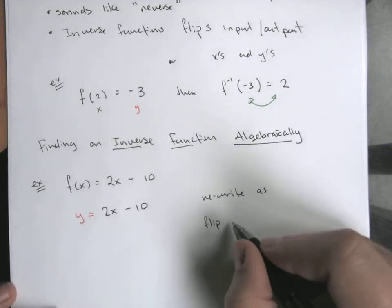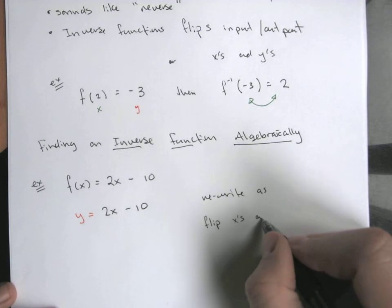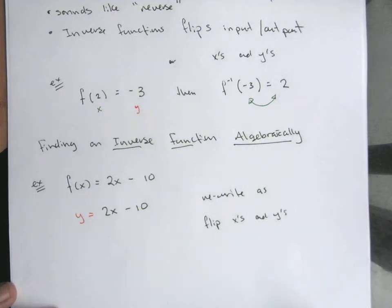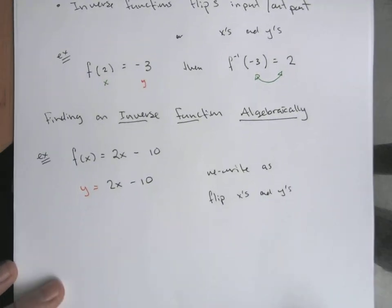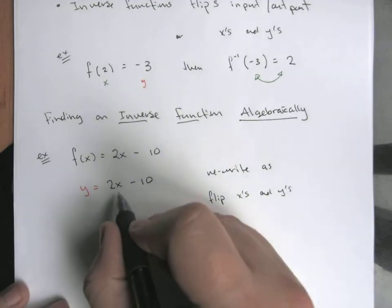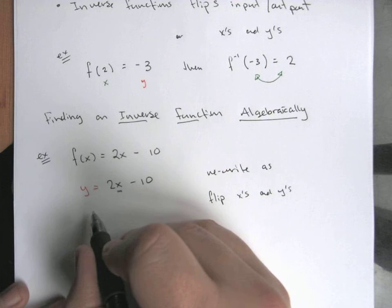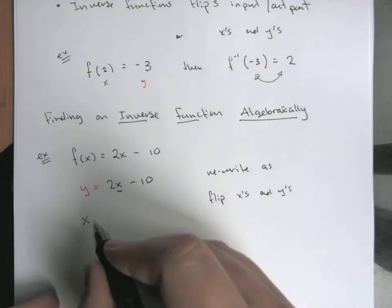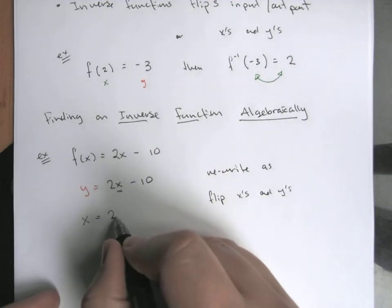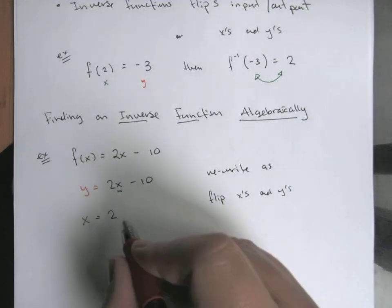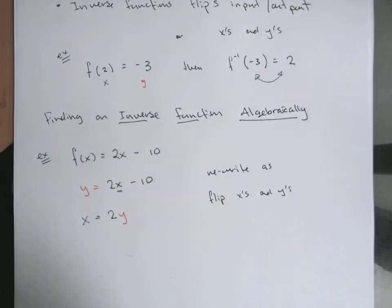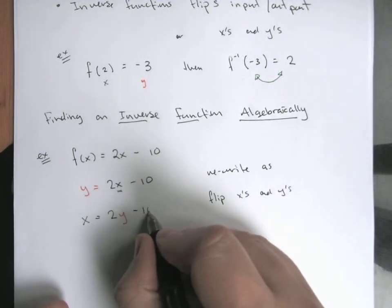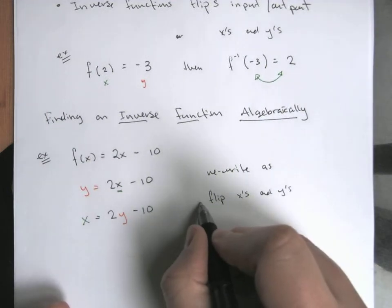If what we're doing is reversing the roles of the x's and the y's, the book suggestion is flip our x's and y's. So the inverse function is going to be the same math form, we're just going to flip the roles. So I'm going to write this as x equals 2 times y minus 10. I'm not changing any of the operations yet, I'm just flipping the roles.